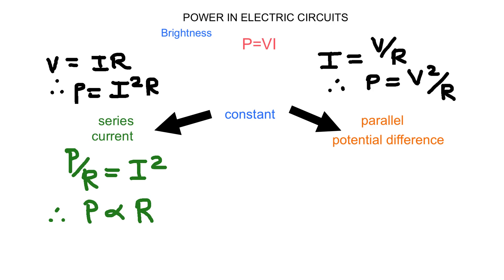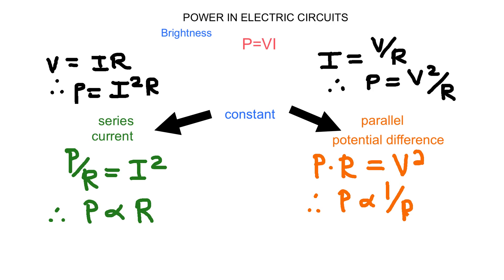For parallel resistors, the potential difference across each branch and across the whole parallel network remains constant. Isolating V and bringing R across — so P times R equals V squared — with V squared being constant, we deduce that P times R is a constant, and therefore the power is inversely proportional to the resistance. This also means we can graphically represent power and see the influence of changing resistance in parallel or series.